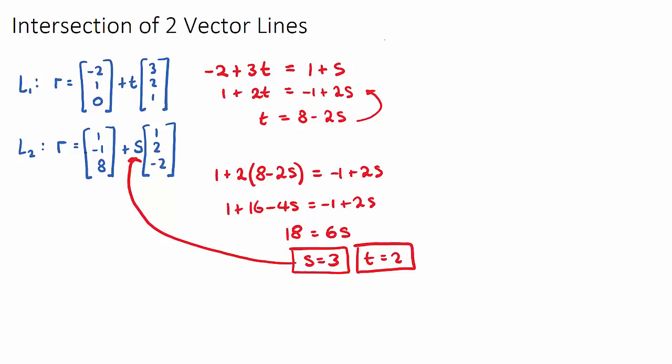So if I sub s equals 3 into L2, I know that I'm going to get 1, negative 1, 8, plus, now instead of s, I'm going to put 3, and it will be 1, 2, negative 2.